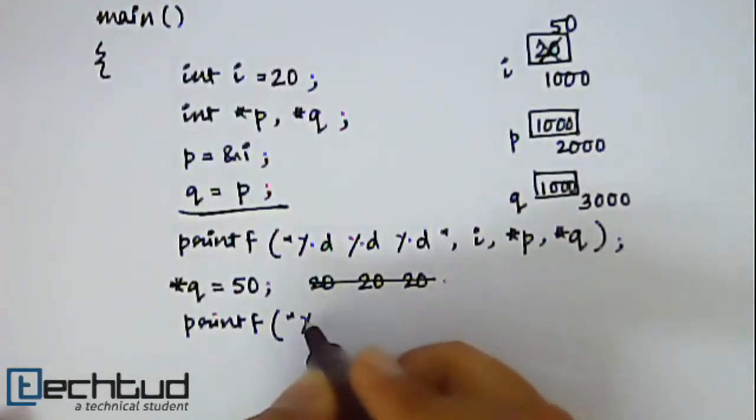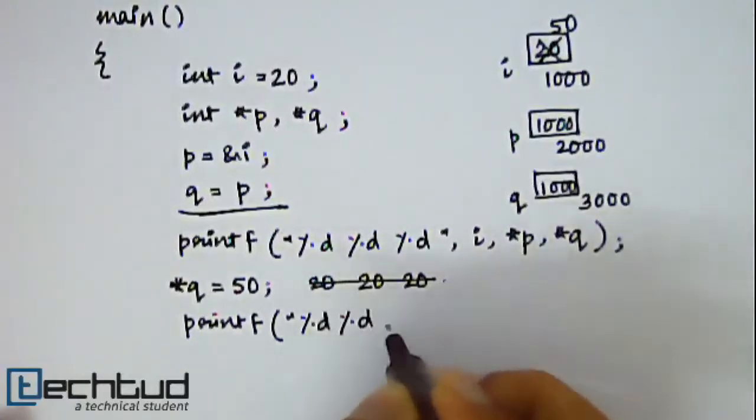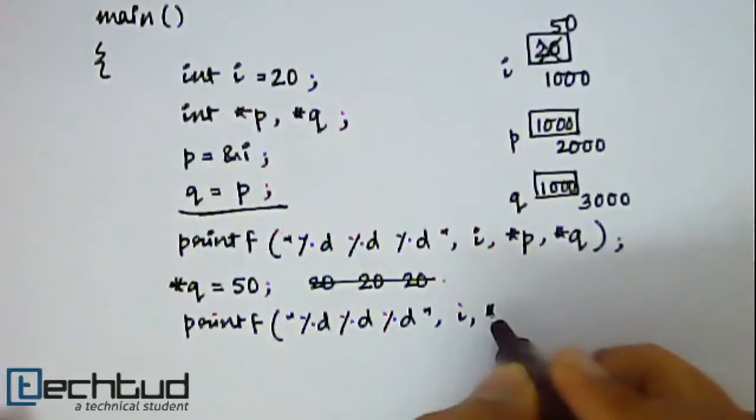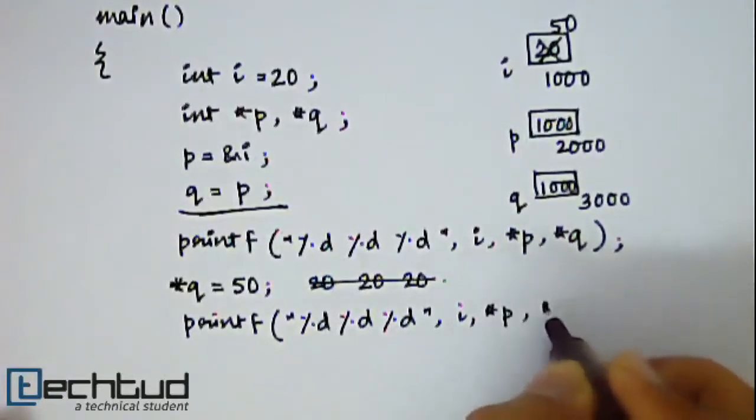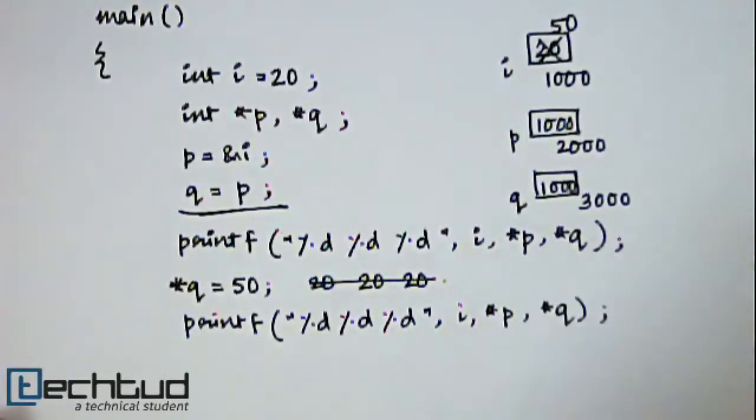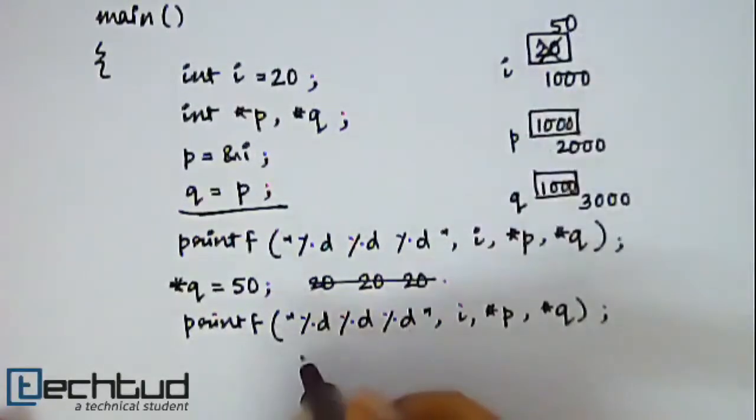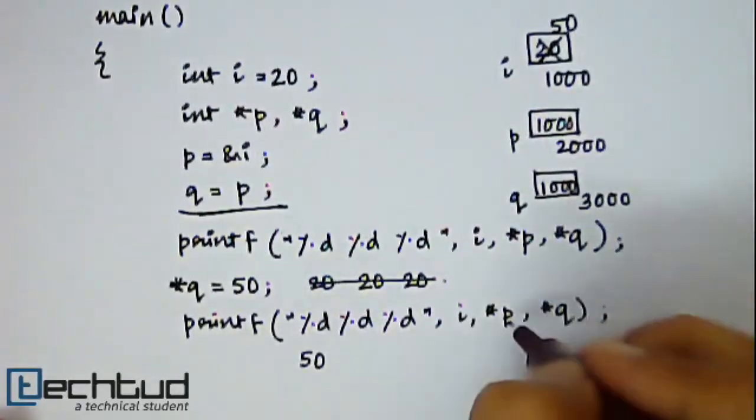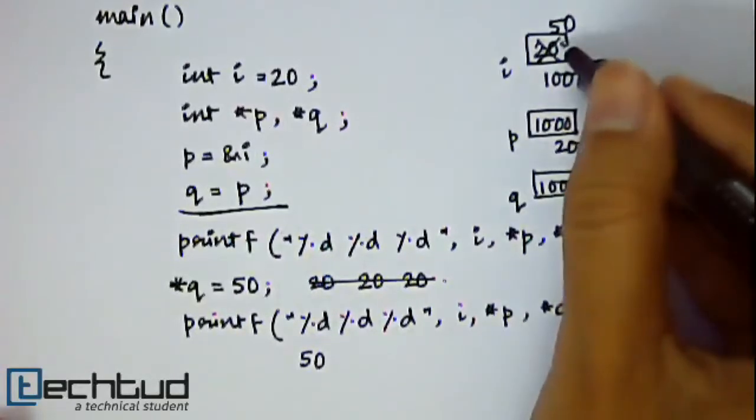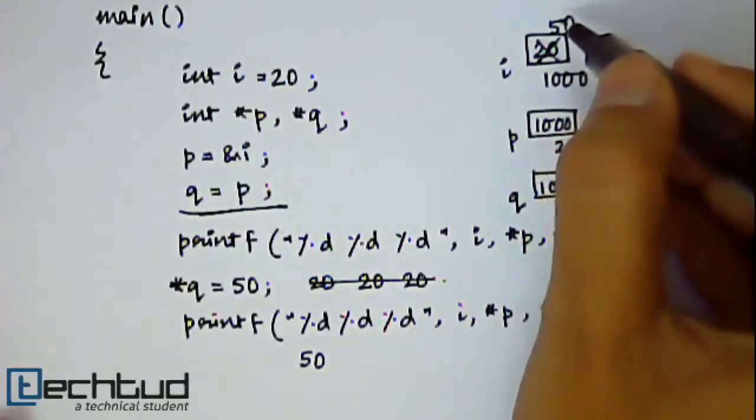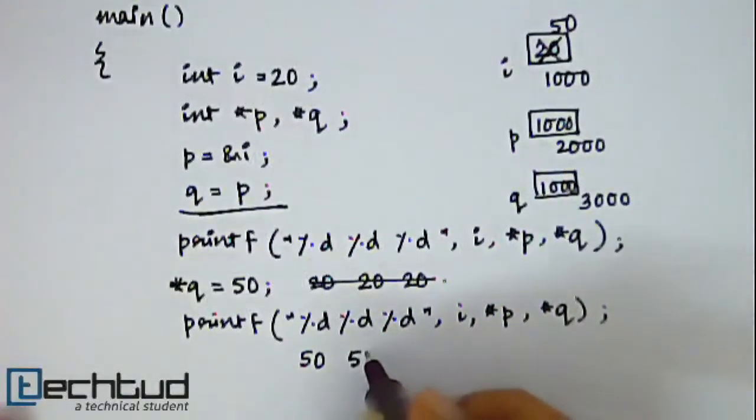So now if I print i, star p, star q - first of all the value of i is 50, it will be printed. Now P and Q both point to the same memory location. In this memory location now 50 value is stored, so both of these will give you 50.